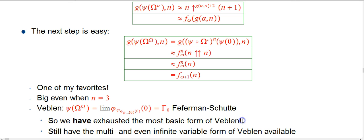So, this is, if you care about the Veblen race, this is a good place to be that we've finally exhausted, we've gone past the single variable form of Veblen, like the phi alpha of beta version, where there's one subscript and one argument in parentheses. There's still the multi-function and even infinite variable form of the Veblen story available.